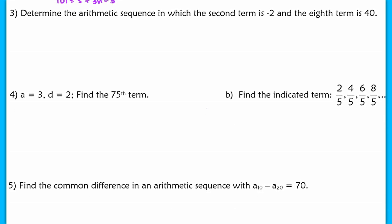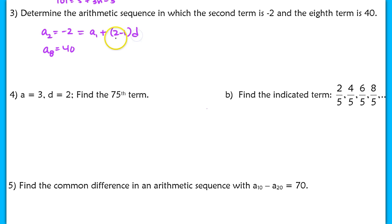Number 3 is one of the more interesting questions from this section, because we're given such little information. It says determine the arithmetic sequence — give the general term — when the second term is negative 2 and the eighth term is 40. So a_sub_2 equals negative 2 and a_sub_8 equals 40. The second term, negative 2, should equal my first term plus 2 minus 1 times d — so d would only be added one time. The eighth term, 40, should be that first term plus 7 times d, or 8 minus 1 times d.